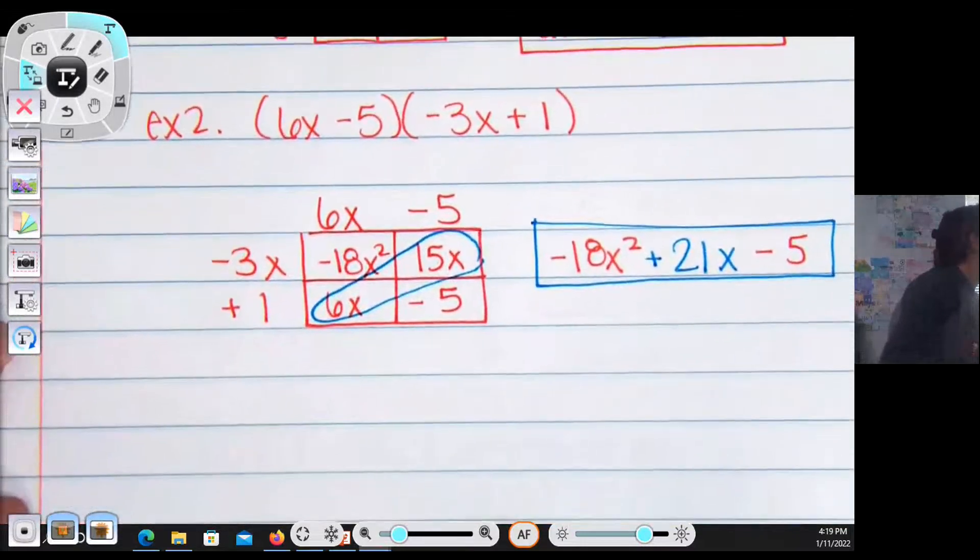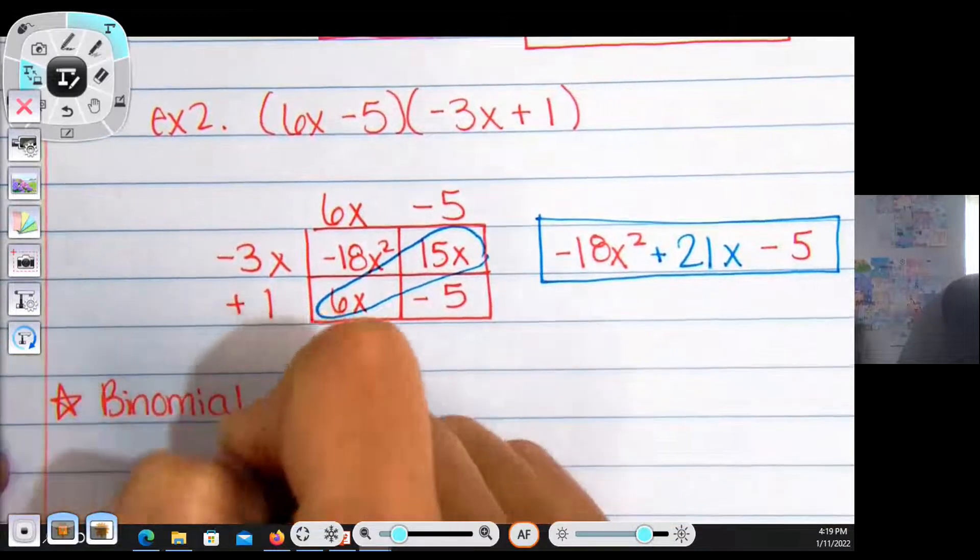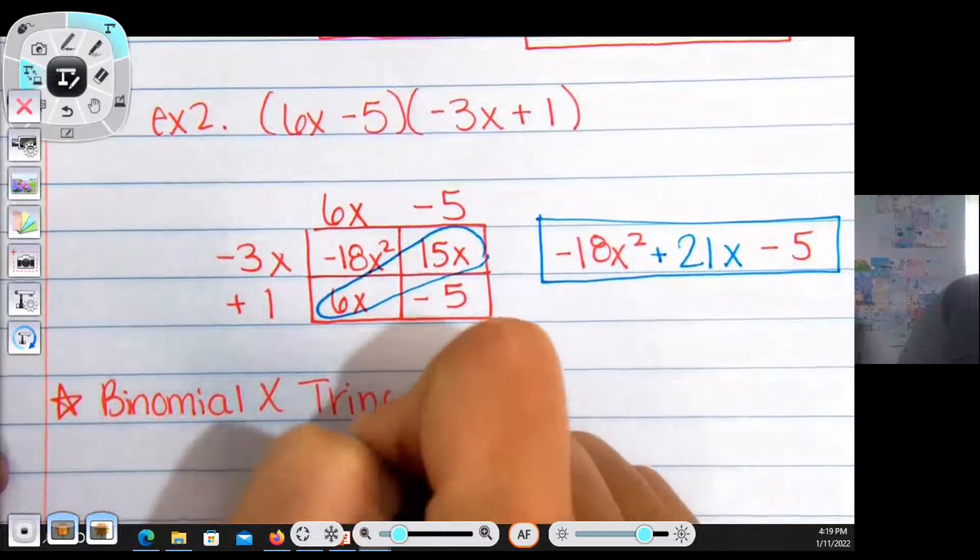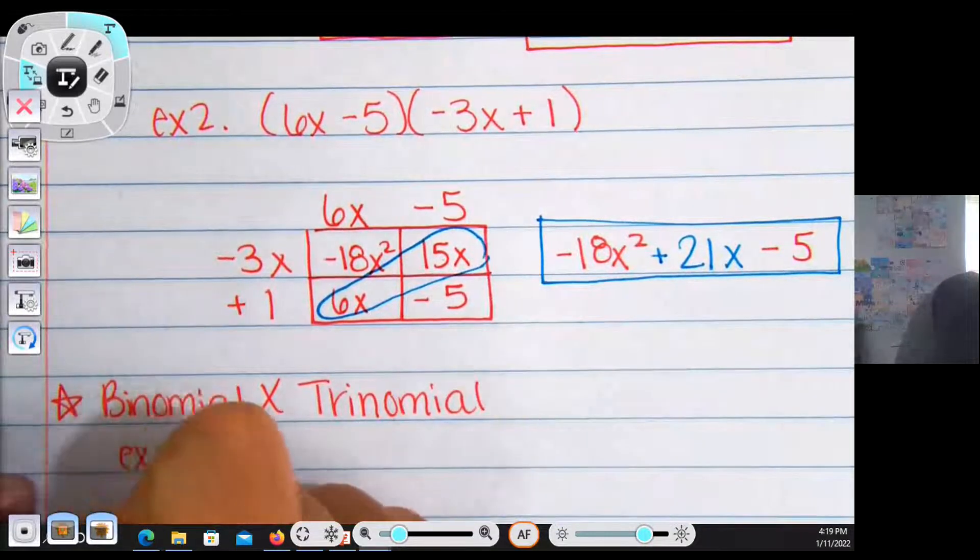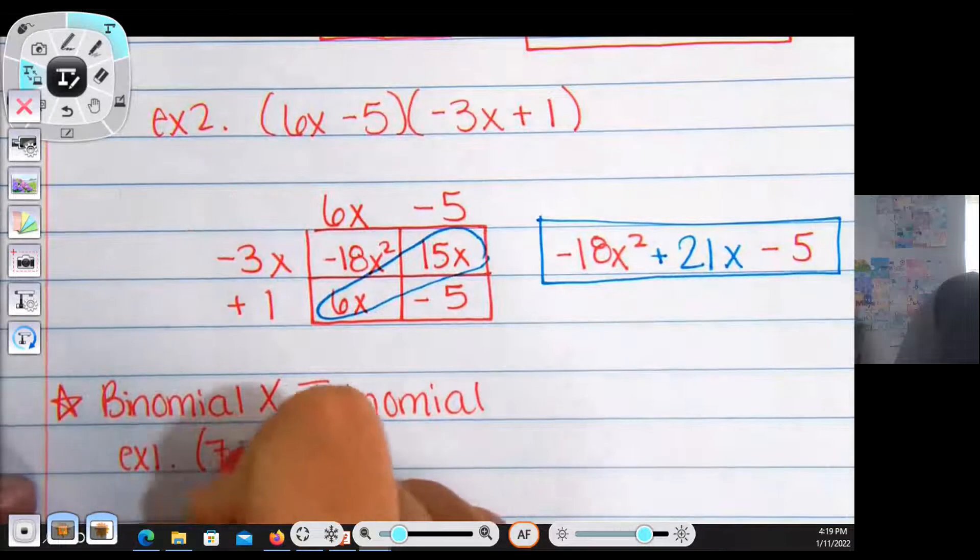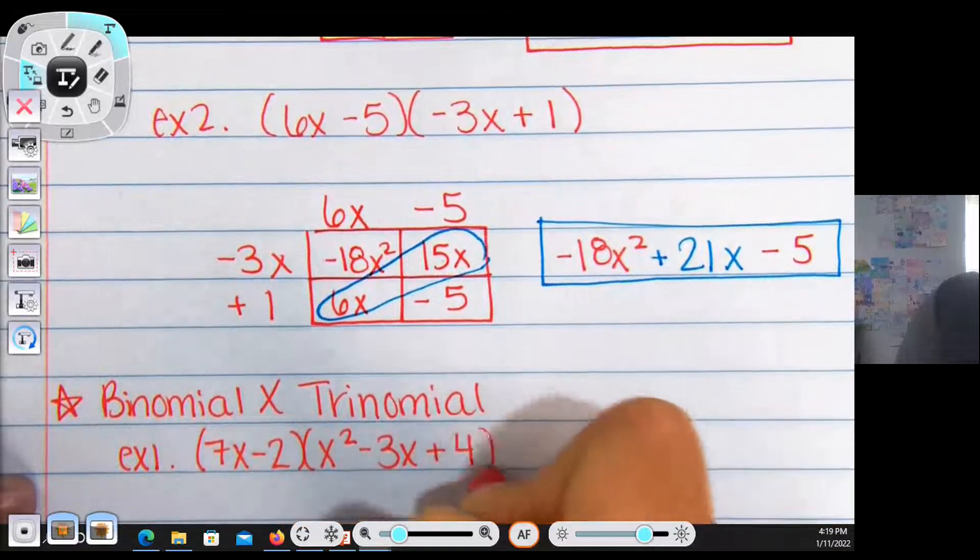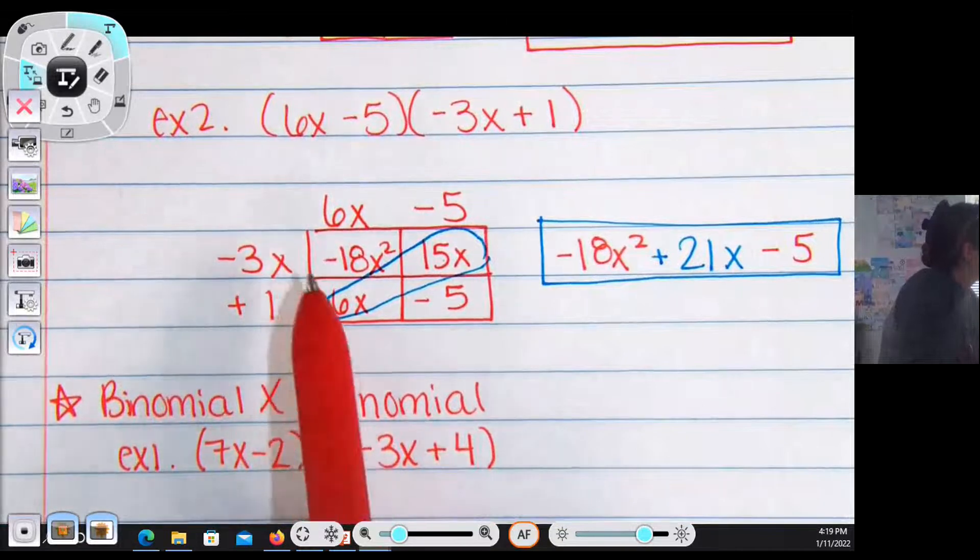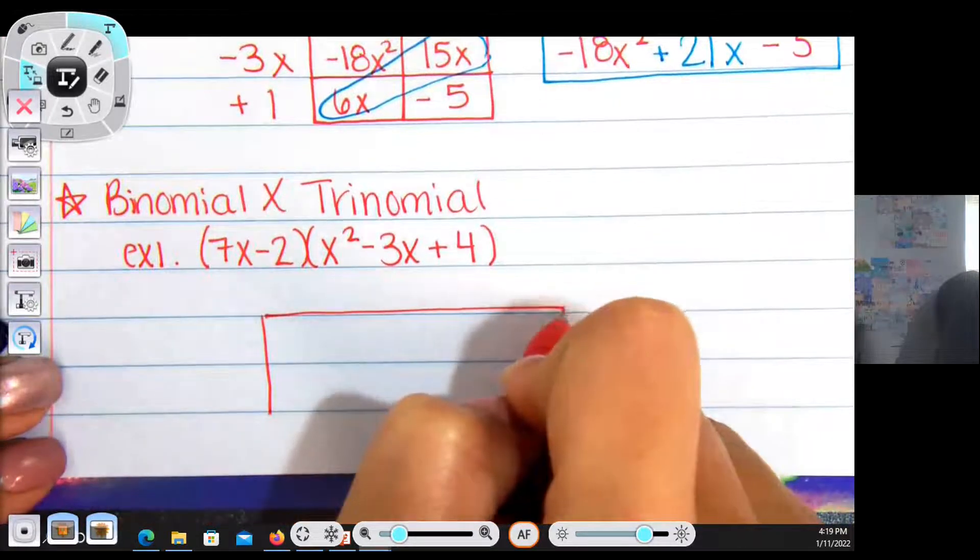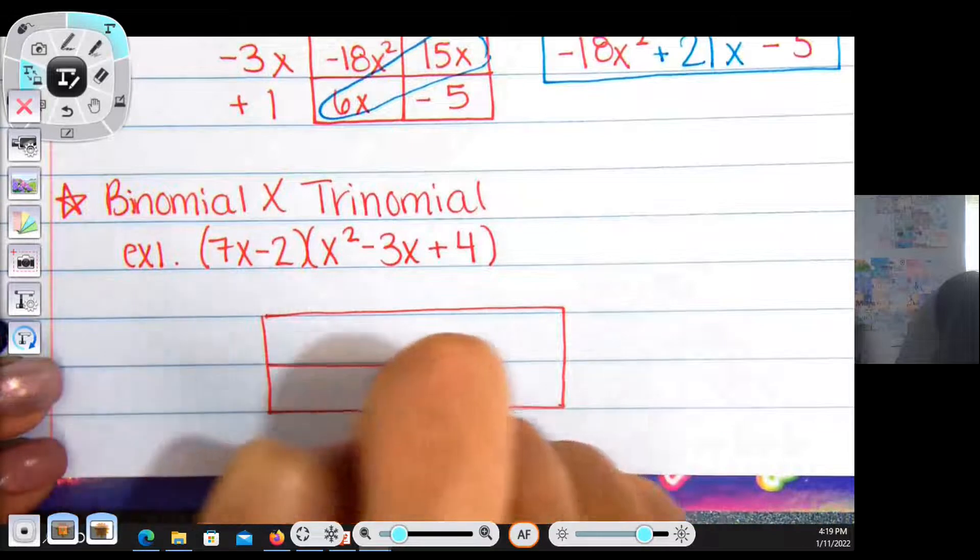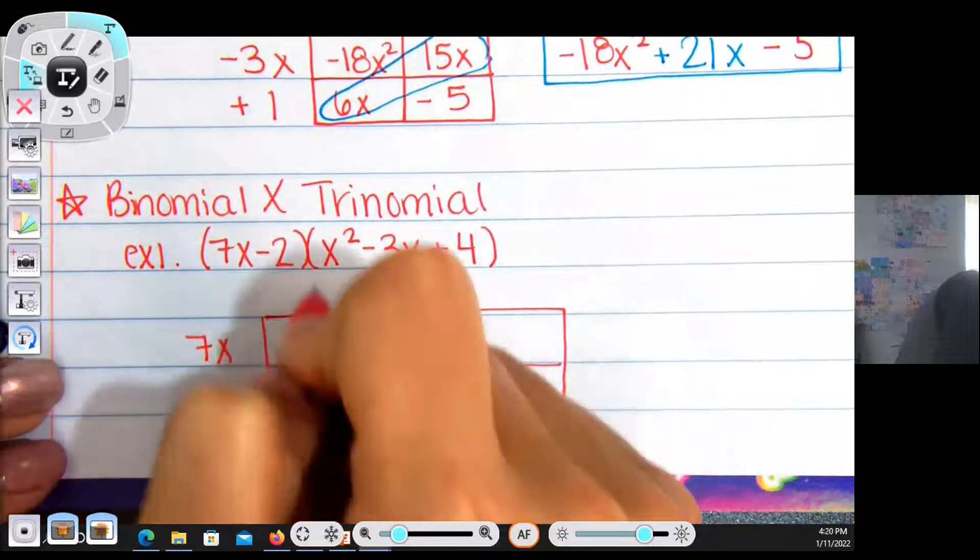Now we're going to do a binomial multiplied by a trinomial. We're going to do one of these, and it's going to be 7x minus 2 multiplied by x² minus 3x plus 4. Notice it's going to be a 2x3, so instead of making a 2x2 box, I'm going to make a 2x3 box.